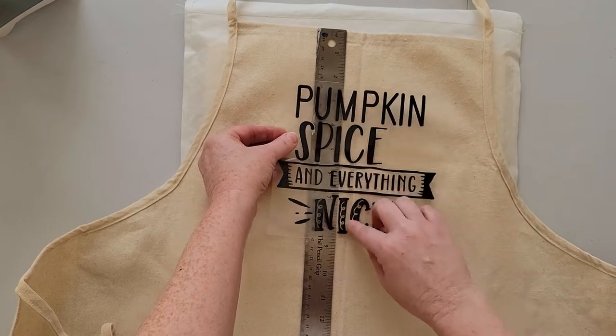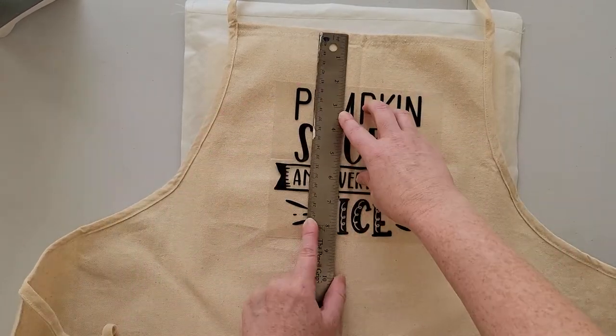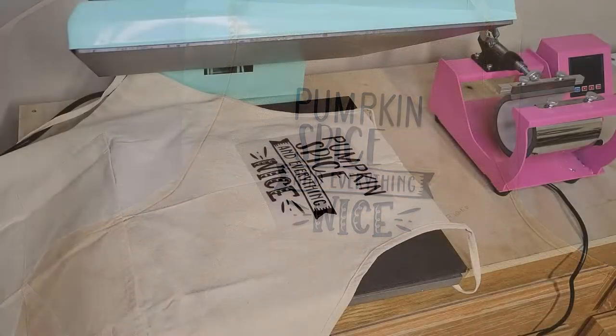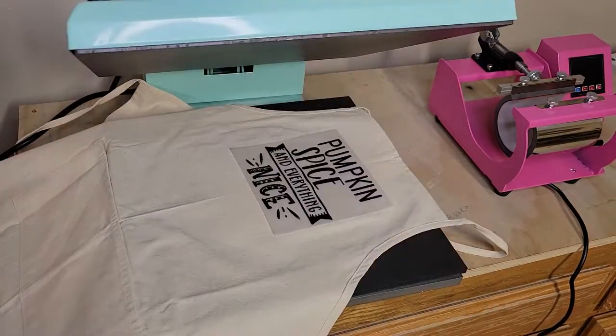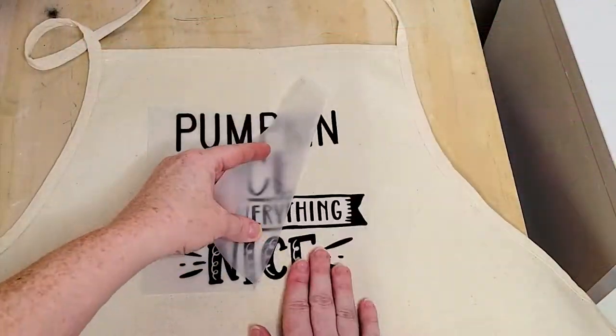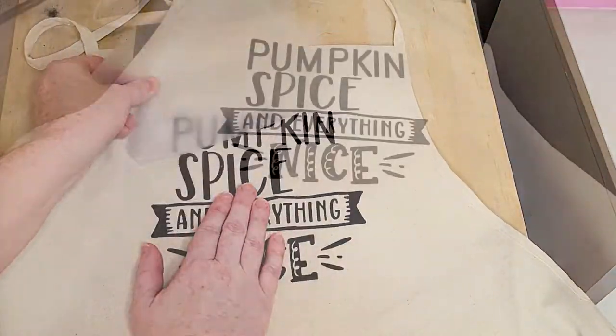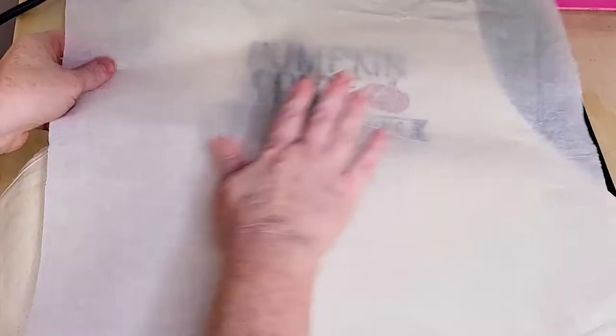Place the HCV about two and a half inches down from the top and press as indicated by the manufacturer. Pay attention to their instructions as to whether you peel off the carrier sheet hot immediately after pressing or wait for it to cool before removing the carrier sheet.